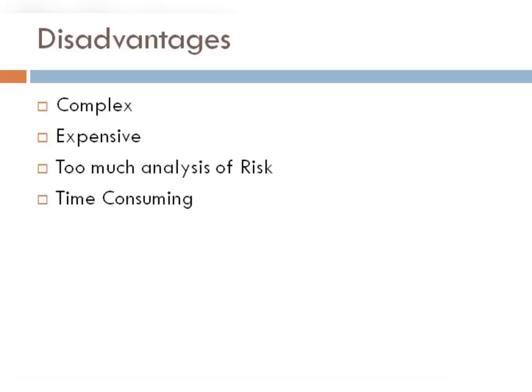Disadvantages — it is quite a complex model. जितने ज़्यादा आप spiral model का radius बनाते जाएंगे complexity बढ़ती ही जाएगी, और complexity बढ़ने के साथ साथ radius बढ़ेगा — we know it is directly proportional — so cost भी बढ़ेगी। It will be very expensive. यह model only suitable है जहाँ आपके पास budget का restriction न हो, otherwise it is a very complex model to implement.